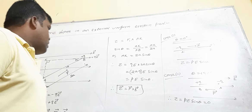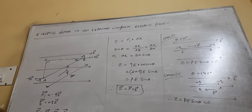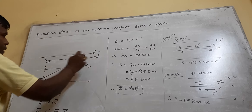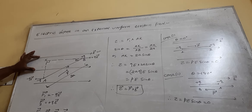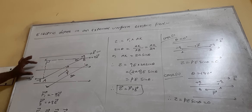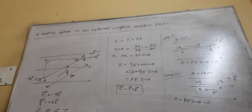Dear children, now we learn about an electric dipole placed in an external uniform electric field. You know what an electric dipole is. When you place an electric dipole in an external uniform electric field, then what happens? The electric field is represented by equidistant parallel lines,